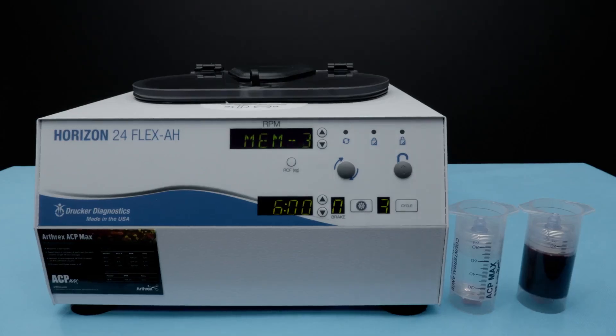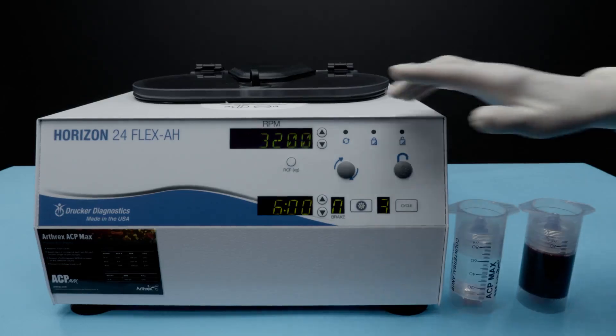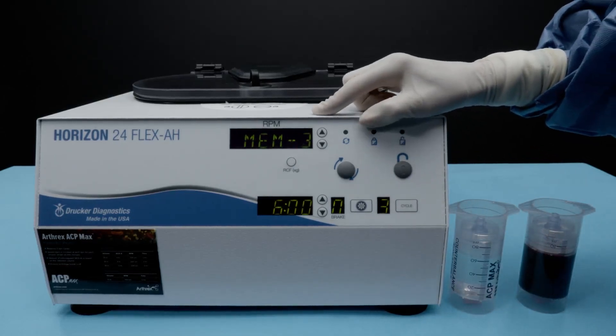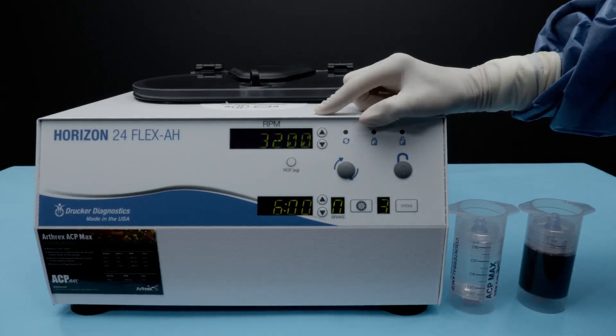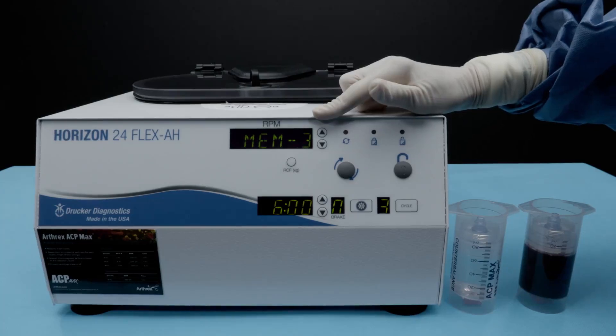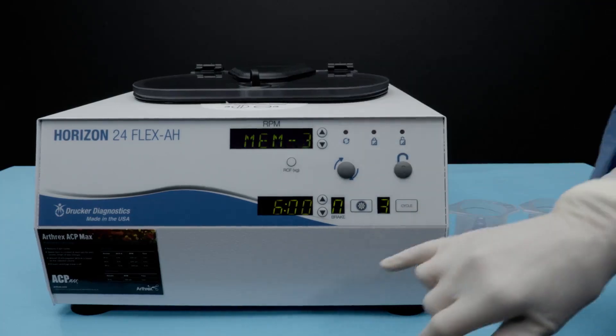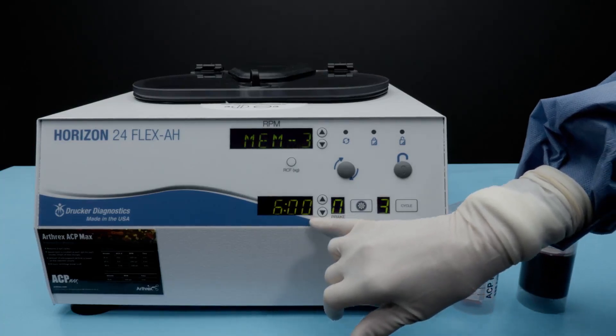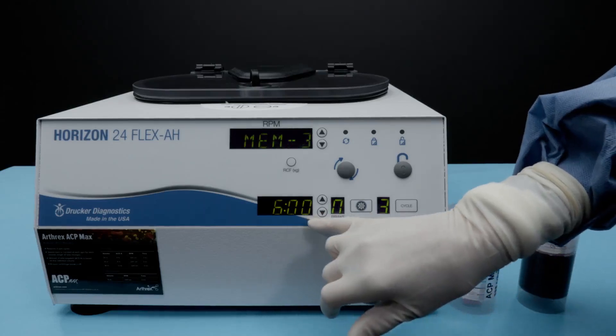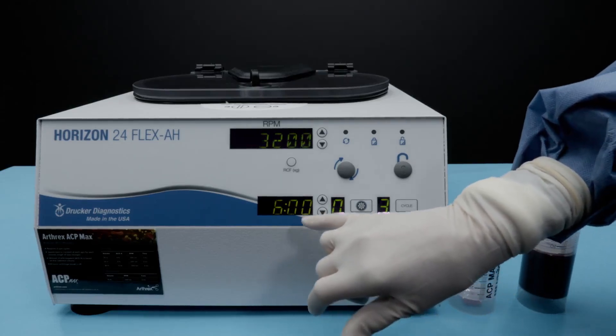The ACP Max device can process 30, 60, or 90 milliliters of peripheral blood. It will require you to change the time setting, but not the RPM setting on the centrifuge. The RPM setting for the first spin will always remain at 3,200 RPM. The time will change. If you're processing 30 cc's, you'll do a 3-minute spin, 60 a 6-minute spin, 90 a 9-minute spin.